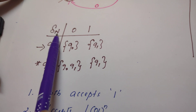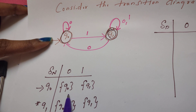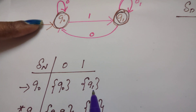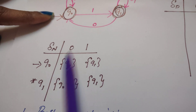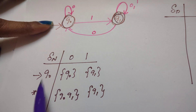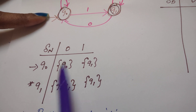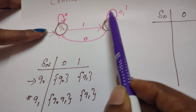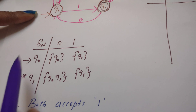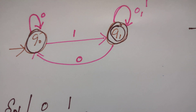The transition table is labeled del N. From state Q0 on reading 0, it goes to Q0. From state Q0 on reading 1, it goes to Q1. From Q1 on reading 0, it goes to Q1 as well as Q0. From state Q1 on reading 1, it goes to Q1 itself. Whatever is in the transition diagram, I have converted into the transition table. Q0 is the start state, and since Q1 is circled two times, Q1 is the final state.